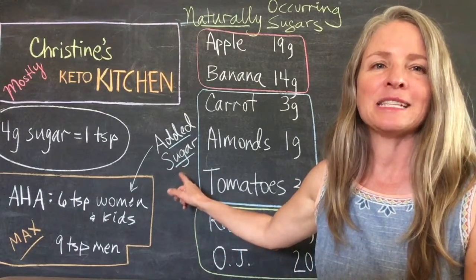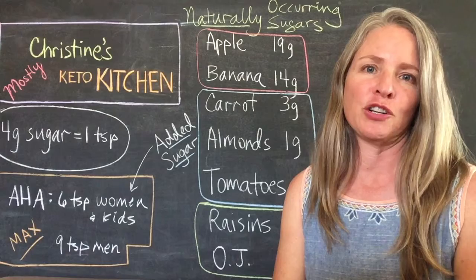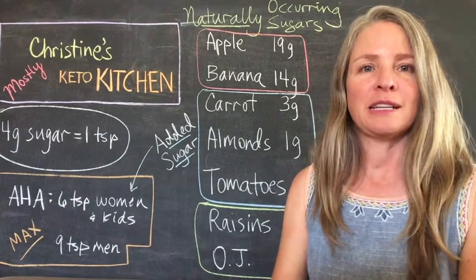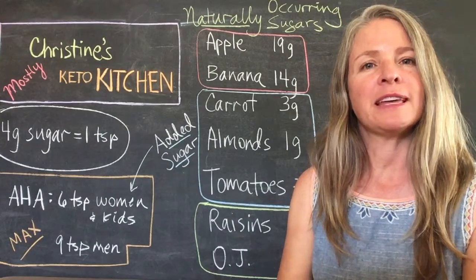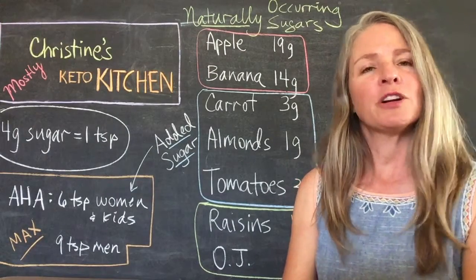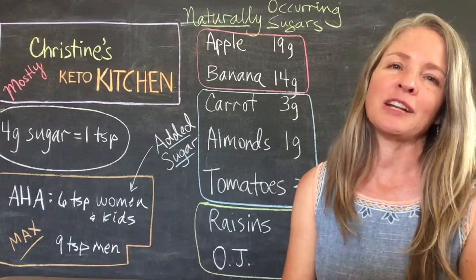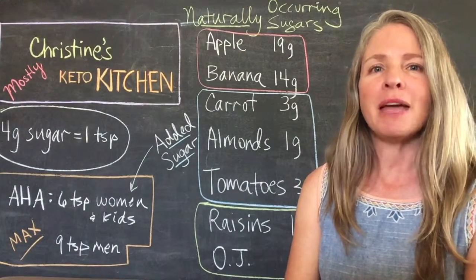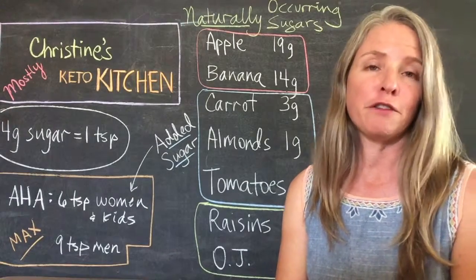I want to point out that those limits are specifically about added sugars — sugars that are added to processed foods. Those are different from naturally occurring sugars. So I went through my pantry to look at some naturally occurring sugars, and the main place you'll find them is in fruit.